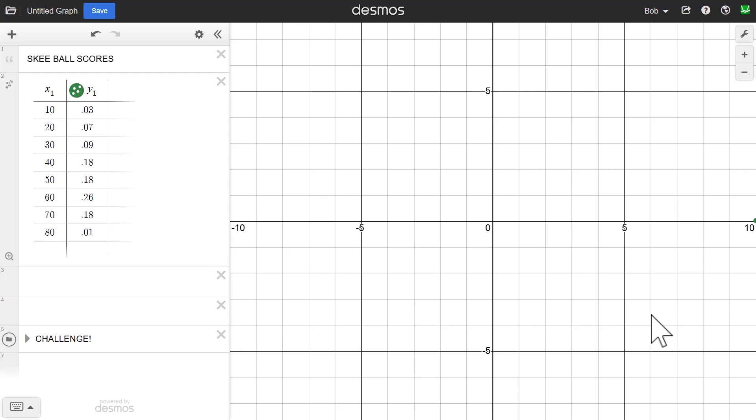So unfortunately, Desmos does not support weighted lists at this point, but that's okay. There are still ways to find the mean and standard deviation quite easily using the Desmos calculator, and also different ways that you can get students to interact with these probability distributions in a meaningful way.